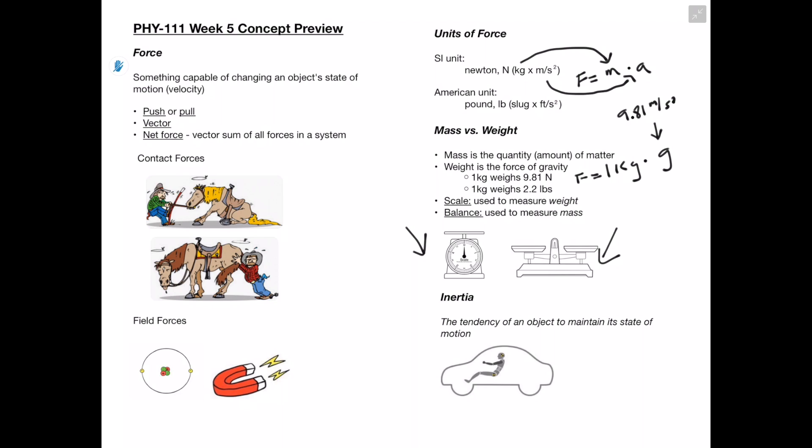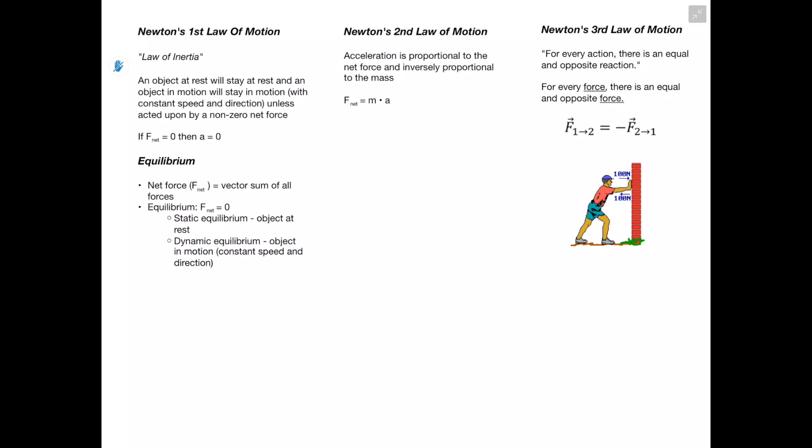Inertia is the tendency of an object to maintain its state of motion. For example, when sitting in a car moving at a certain speed and you step on the brakes, it feels like you're moving forward — that's because your body has a natural tendency to stay in motion. Conversely, when driving slowly and speeding up, that's why you feel pushed into your seat.